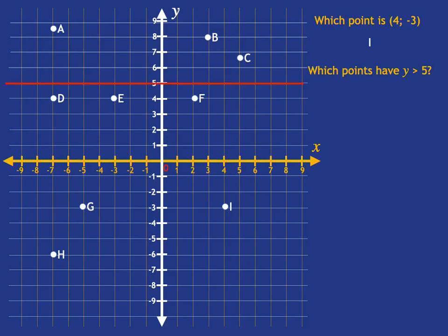Well, where's 5 steps up? It's that red line. So any points that are more than 5 steps up will be above that line. So we're talking about the points A, B and C.